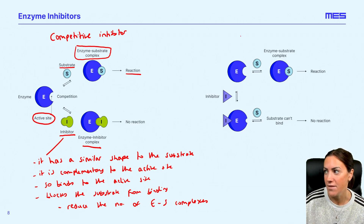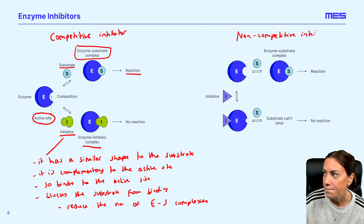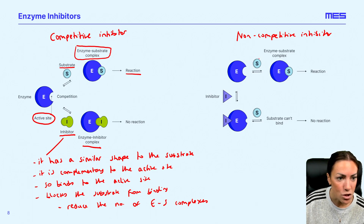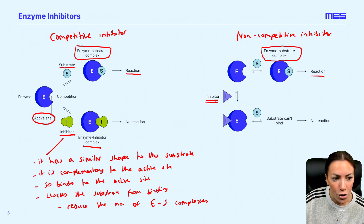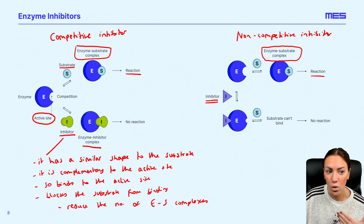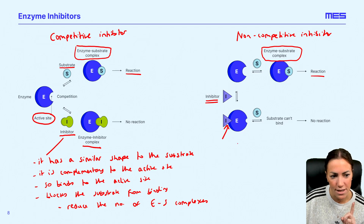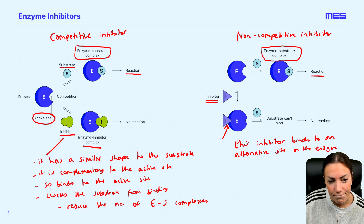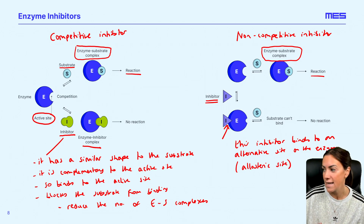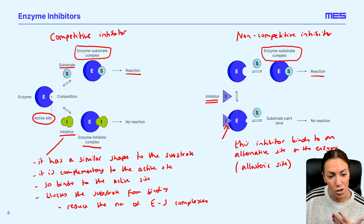The non-competitive inhibitors work in a different way. We can see the substrate is complementary to the enzyme's active site — it binds to the active site, forms the enzyme substrate complex, and that's when we get the reaction. Now if we look at the non-competitive inhibitor, it's not a similar shape at all to the substrate. It's actually binding to an alternative site on the enzyme — you can refer to that as an allosteric site. It's not the active site.